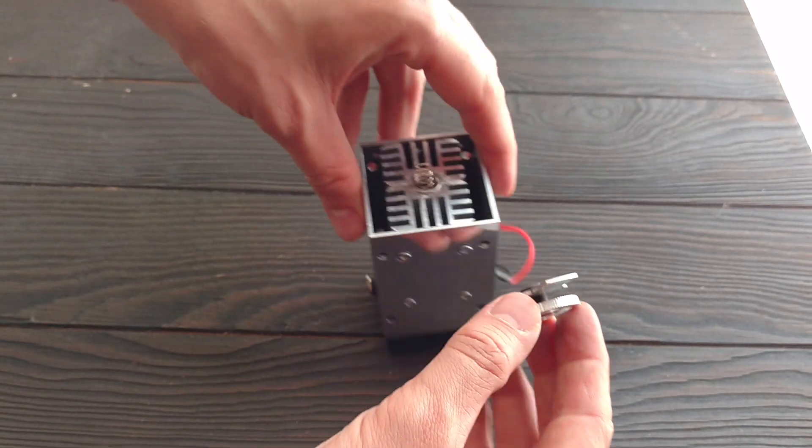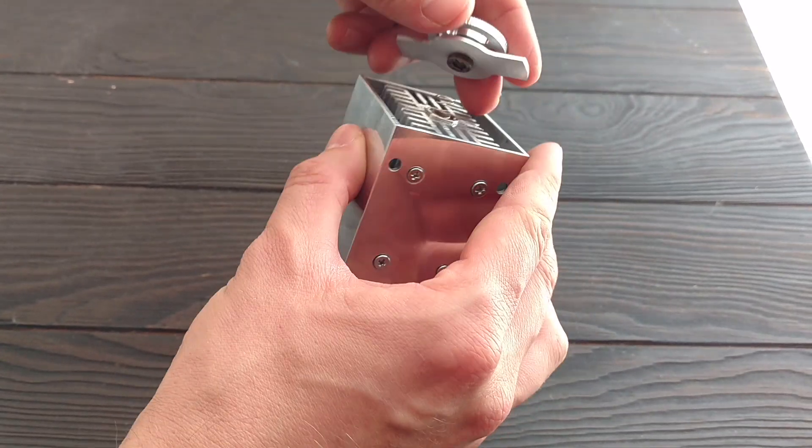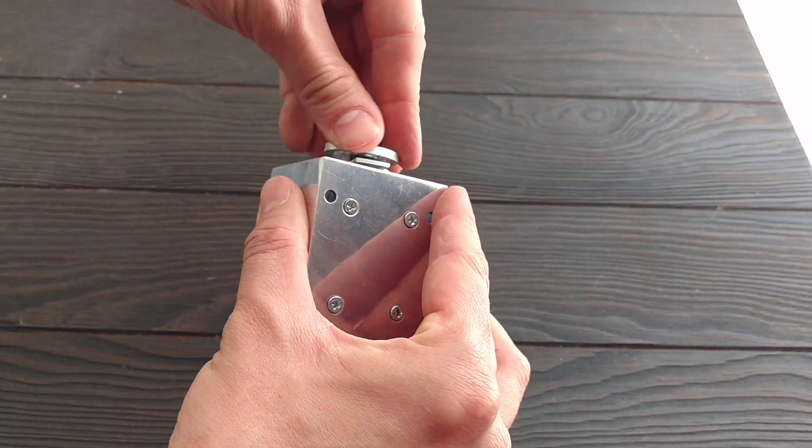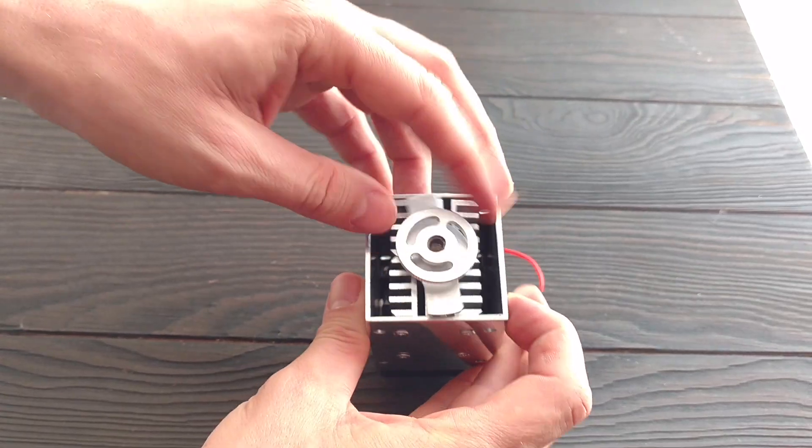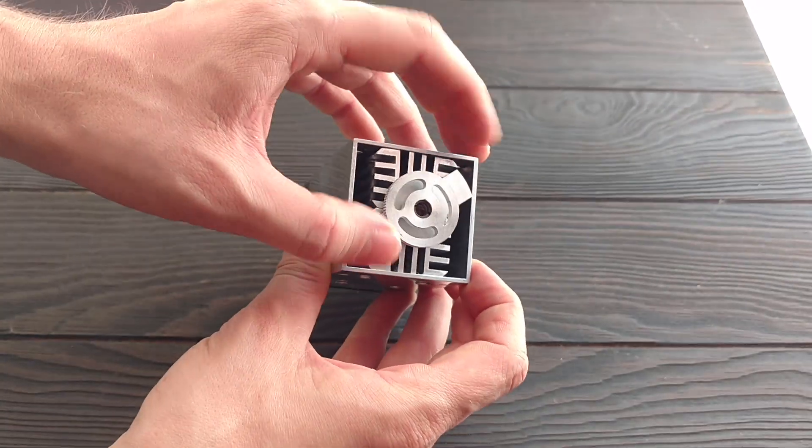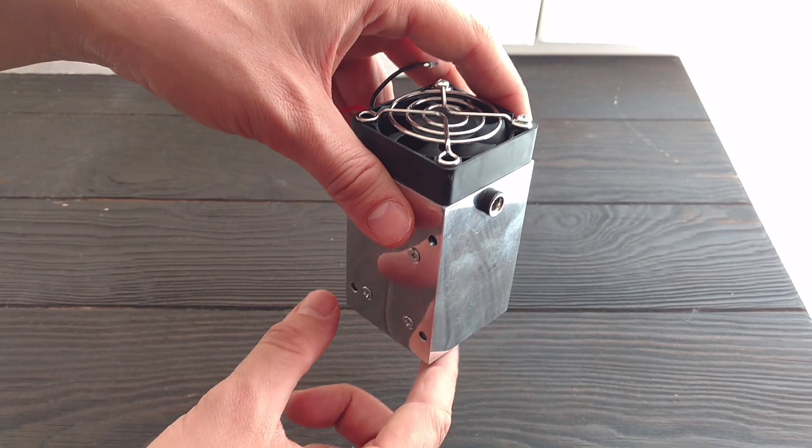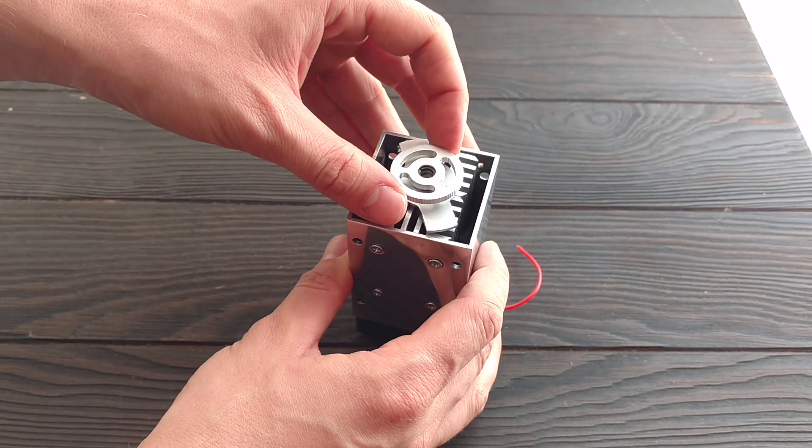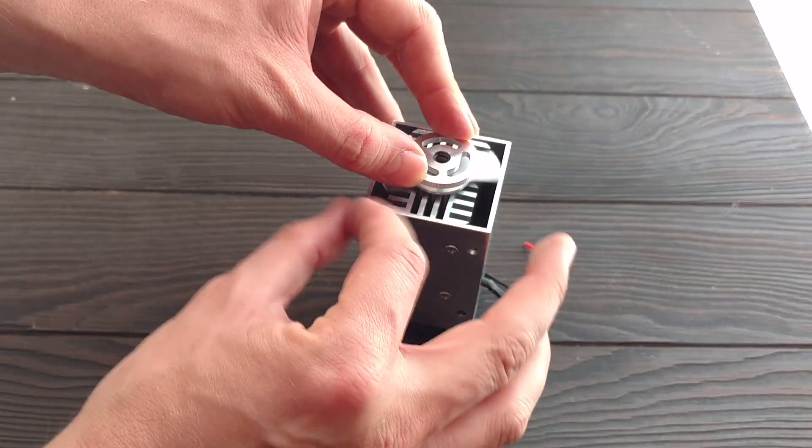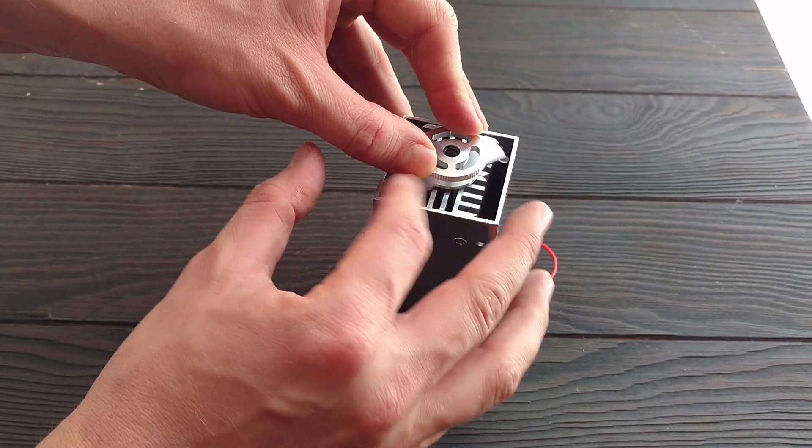So now we can screw the lens inside the laser. And once you did a focus, for example you're installing the laser like this, you're doing focus, and when you get the focus you just need to screw this fixation ring.